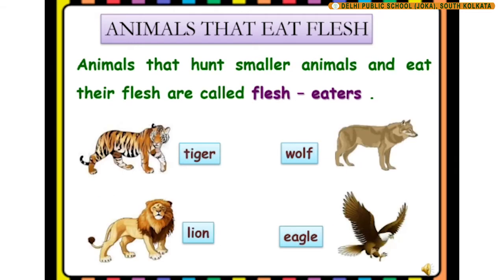Now let us know about animals that eat flesh. Animals that hunt smaller animals and eat their flesh are called flesh eaters. For example, tiger, wolf, lion, and eagle are all flesh eater animals.